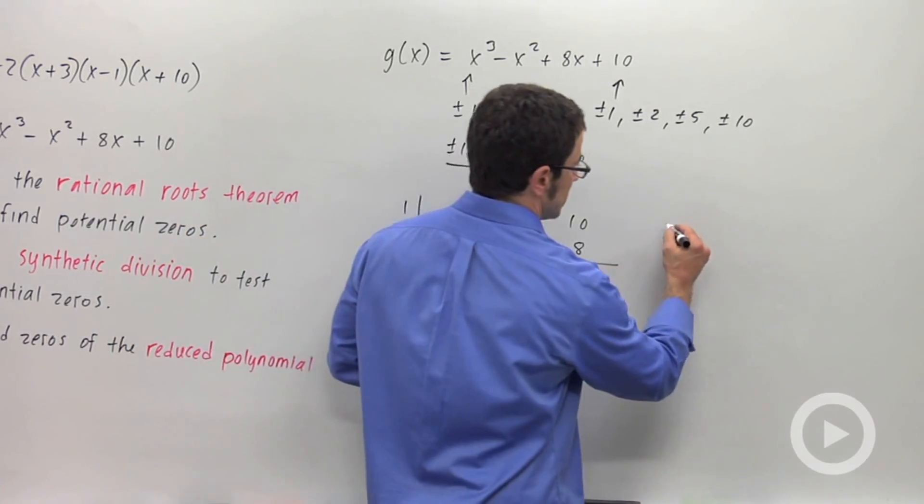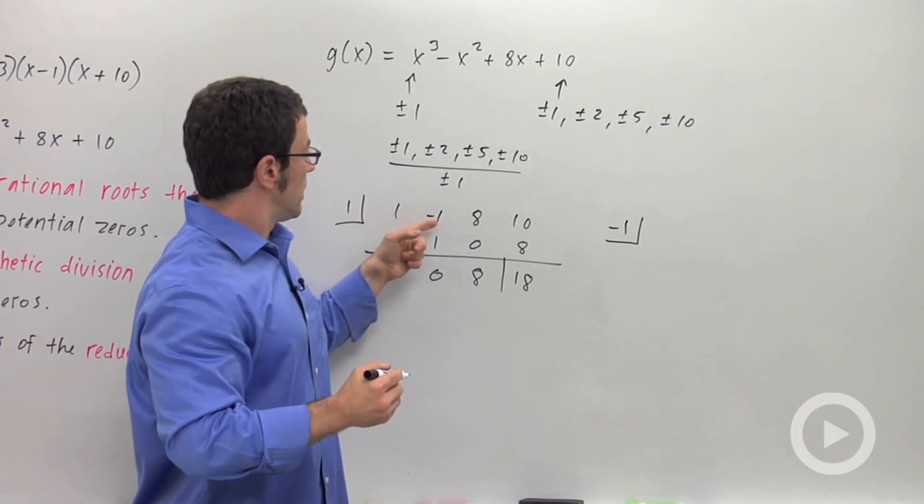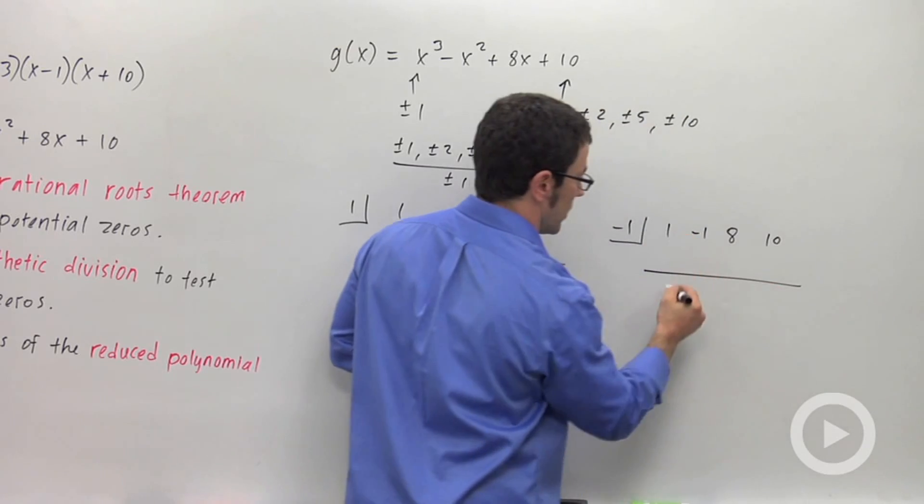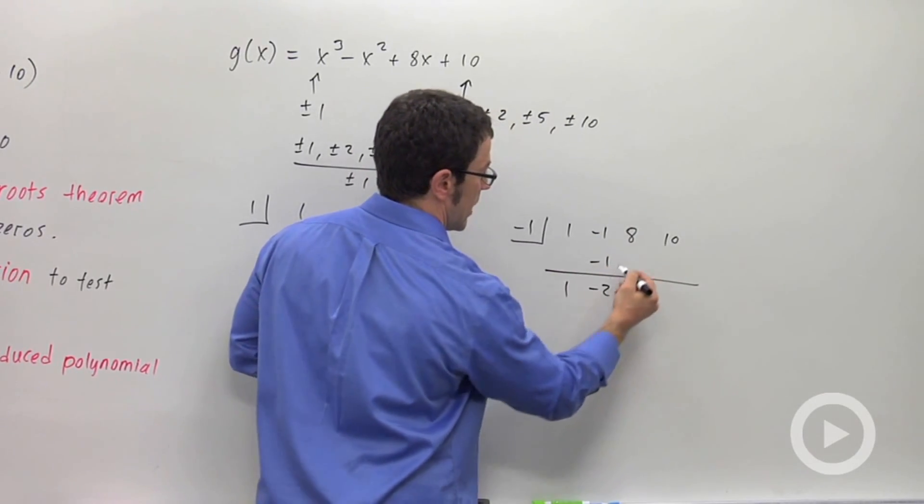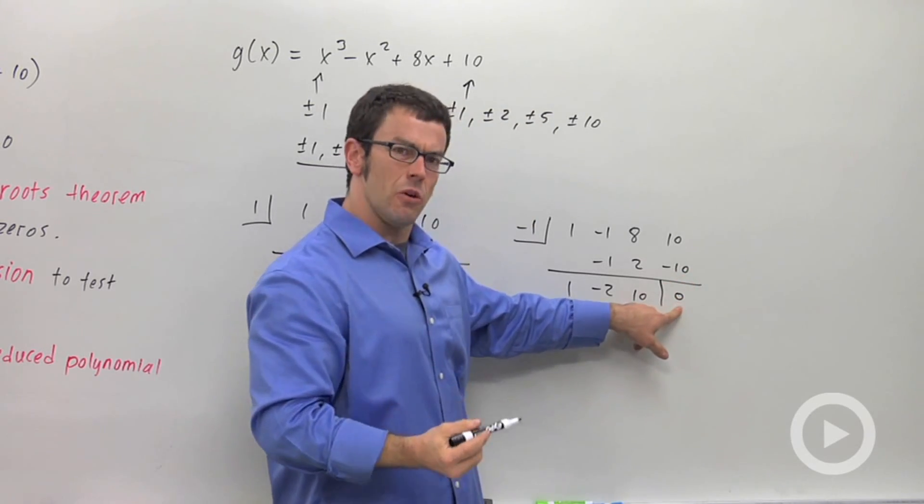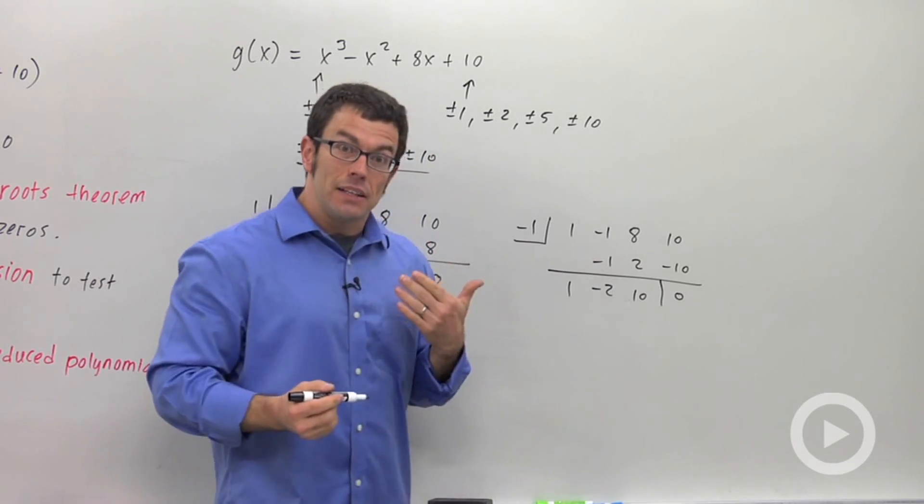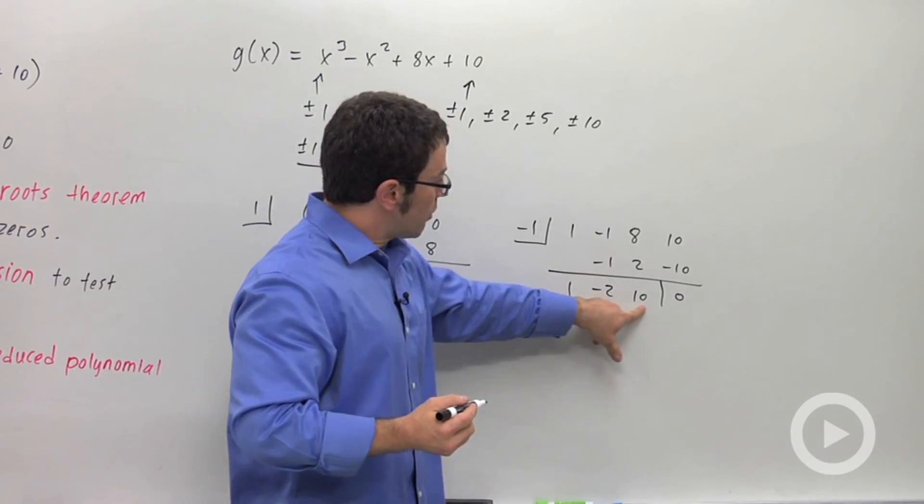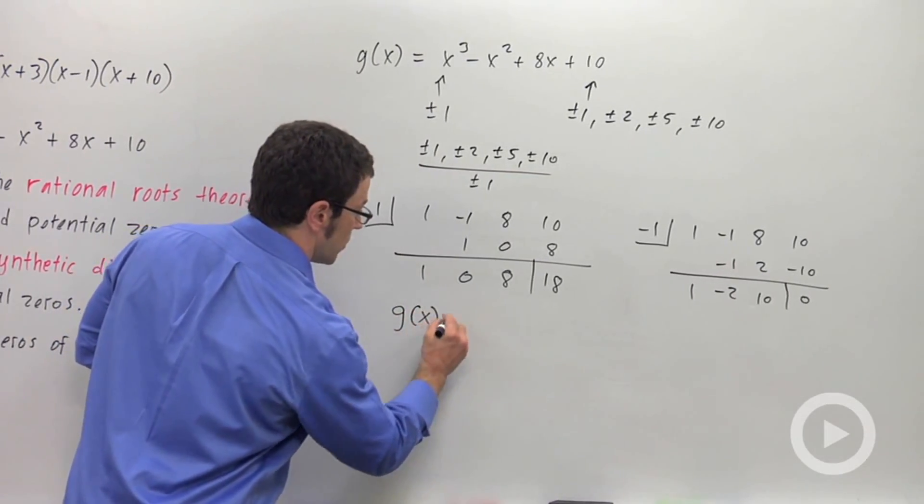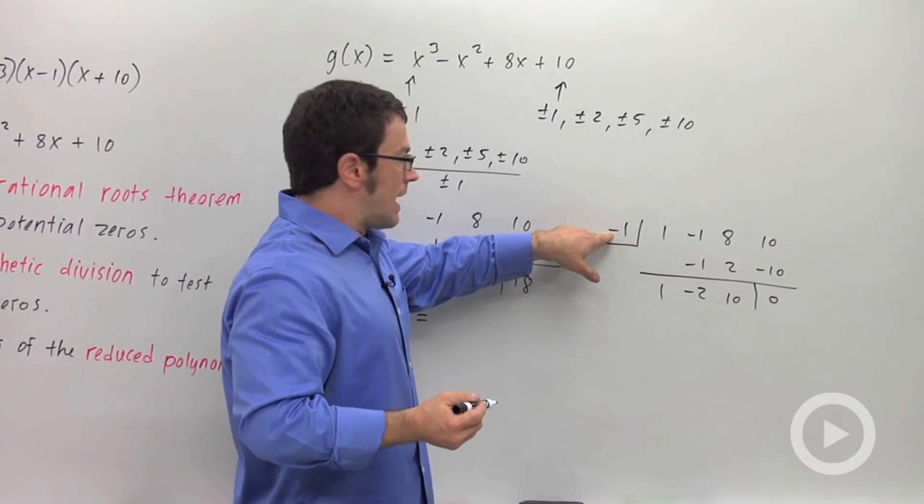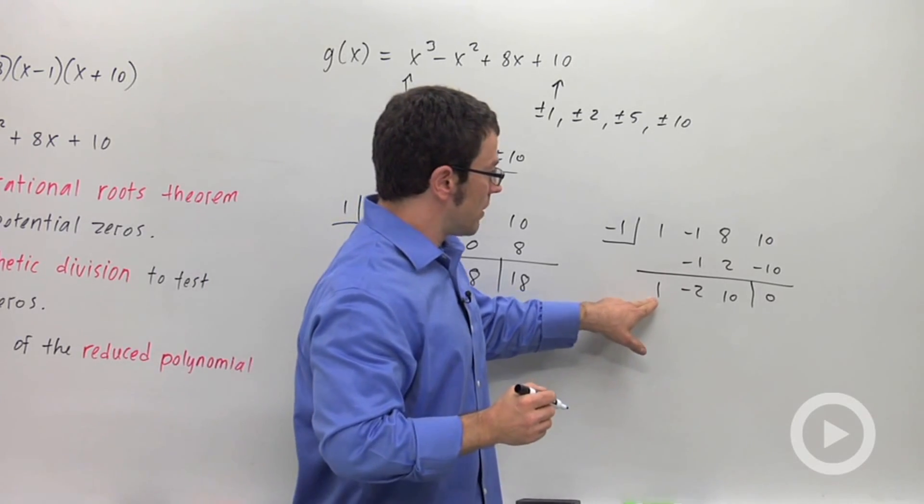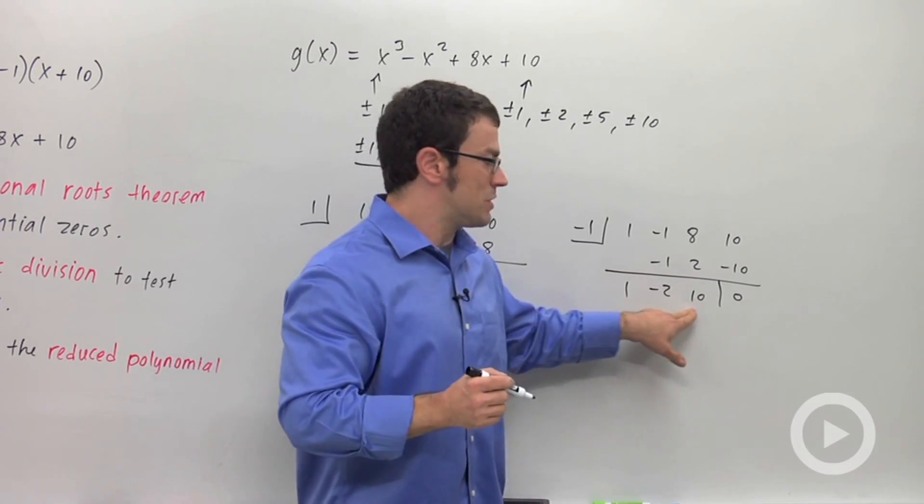Let's try negative 1. Same coefficients: 1, negative 1, 8, 10. And same process. Bring the 1 down. Multiply. Add and multiply. Add and multiply. And that works. Right? The remainder is 0. And that means that negative 1 is a zero. And that means that x minus negative 1 is a factor. And by the way, these are the coefficients of the other factor. So this function can be written g of x equals, and one factor is x minus negative 1, x plus 1. The other factor is x squared minus 2x plus 10. This is the reduced polynomial.